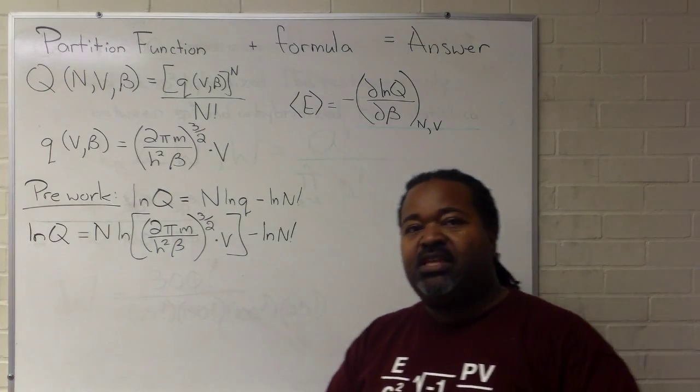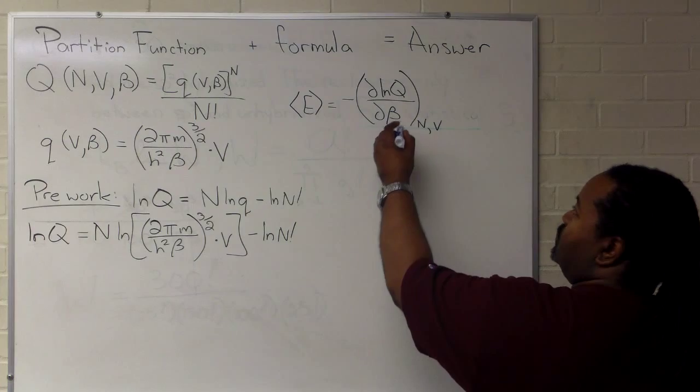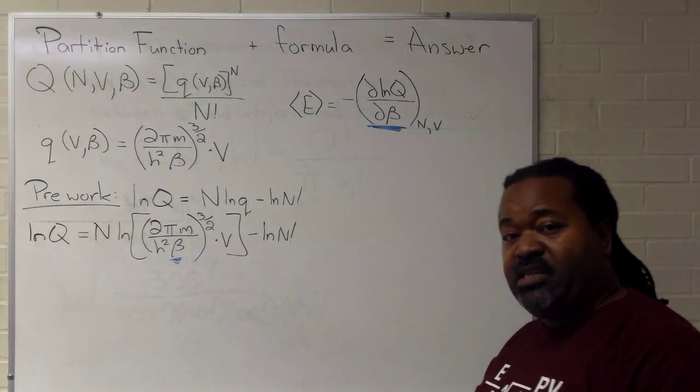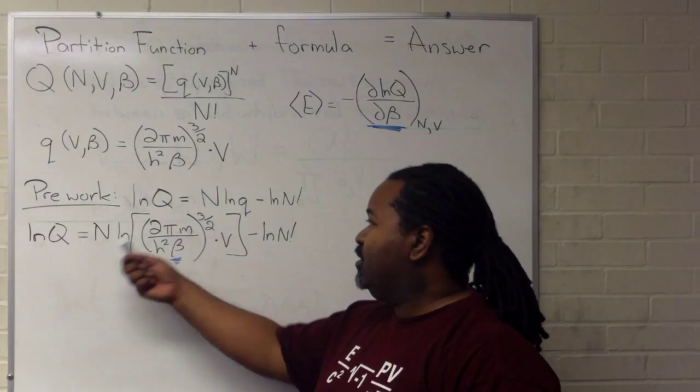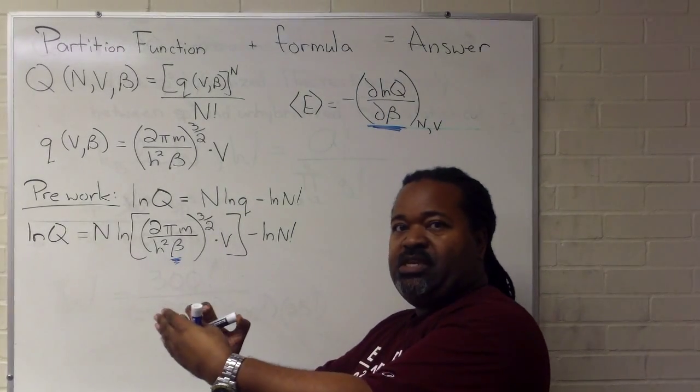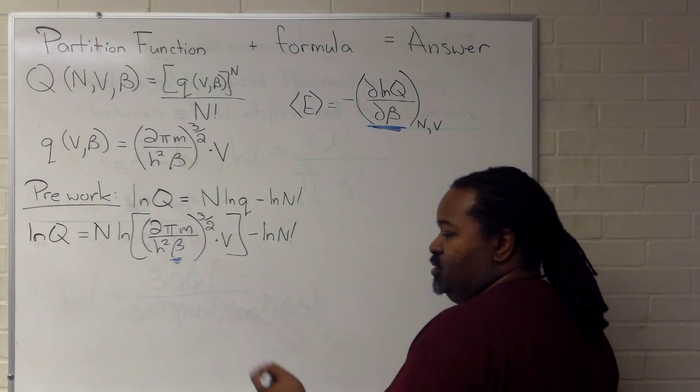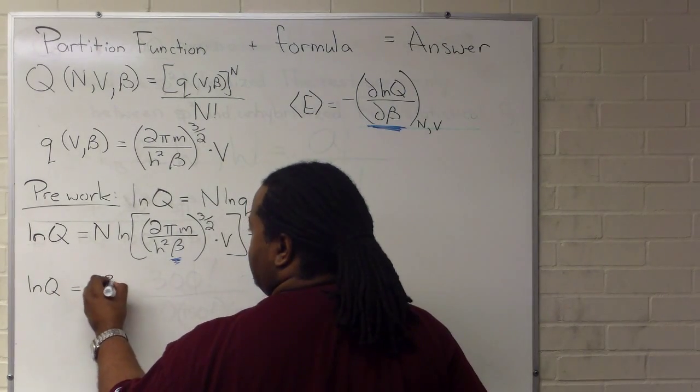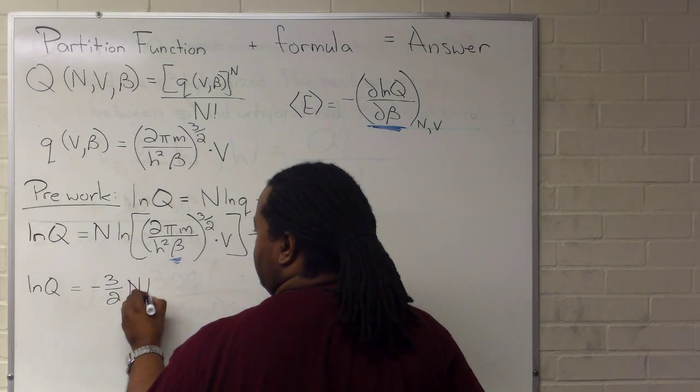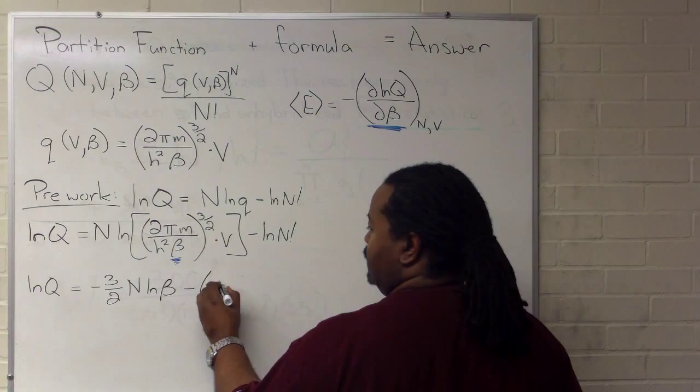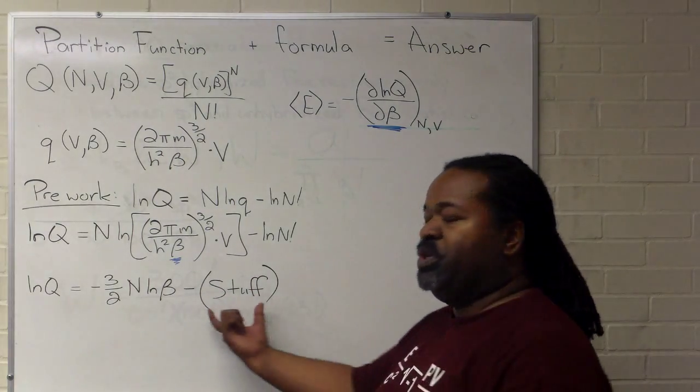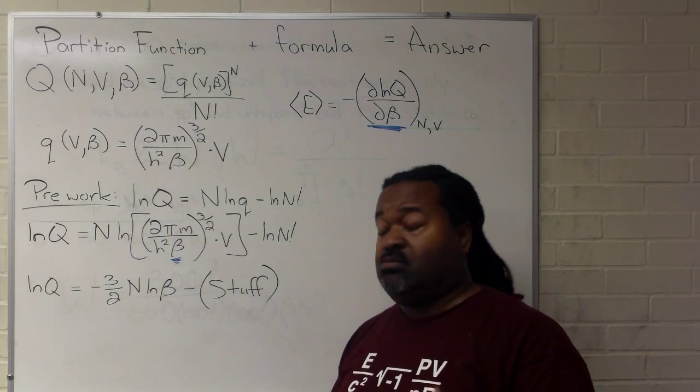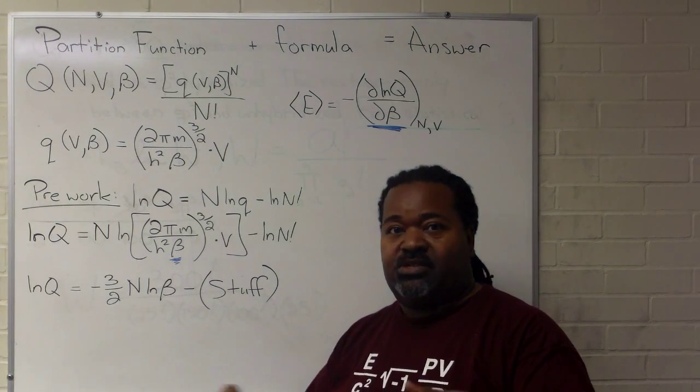At this point, we want to be a little bit clever in recognizing what exactly it is we need. Since this is a partial with respect to beta, this becomes the only thing that's going to survive taking that partial. So we want to really separate this entire expression into the terms that use beta and all of the terms that do not. So then what we have for ln of Q is minus 3 halves n ln of beta and then all that other stuff. The reason I can lump all that together is because we're taking a derivative with respect to beta holding n and V constant. So all of those other terms are just going to go away anyway.